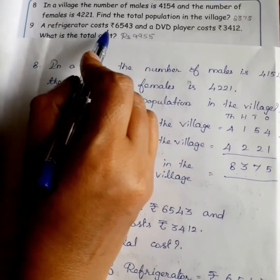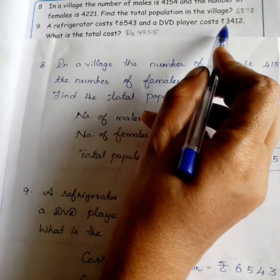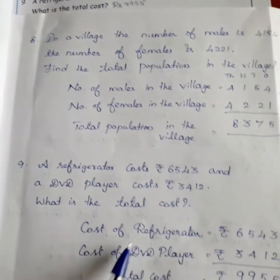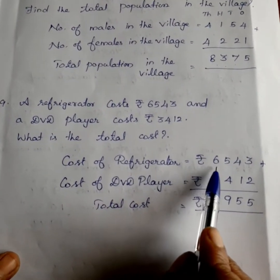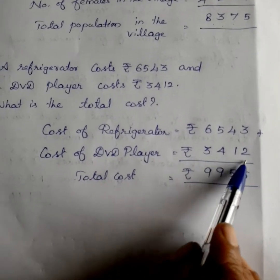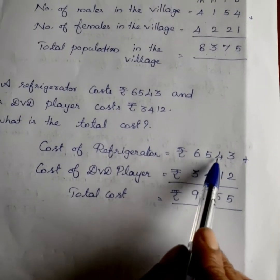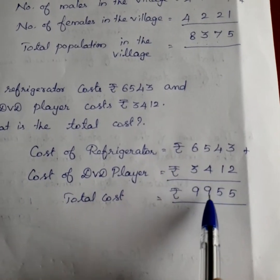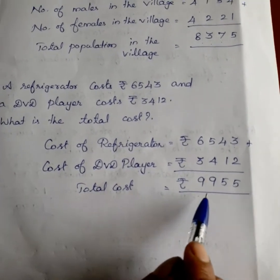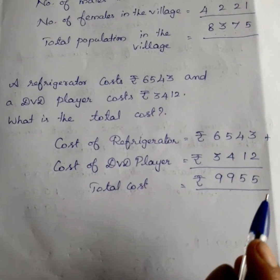A refrigerator costs rupees 6,543 and a DVD player costs 3,412. What is the total cost? The cost of the refrigerator is rupees 6,543. Cost of the DVD player is 3,412. 3 plus 2 is equal to 5. 4 plus 1 is equal to 5. 5 plus 4 is equal to 9. 6 plus 3 is equal to 9. So, the total cost is 9,955. Okay students, thank you. Today's class is over.